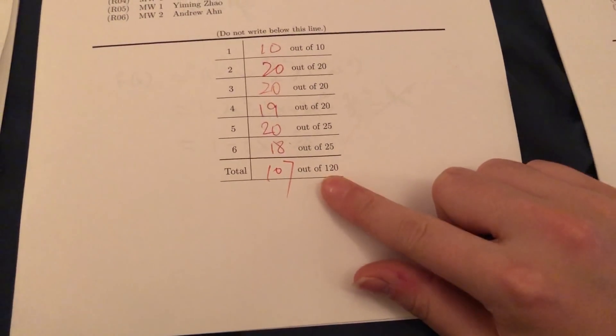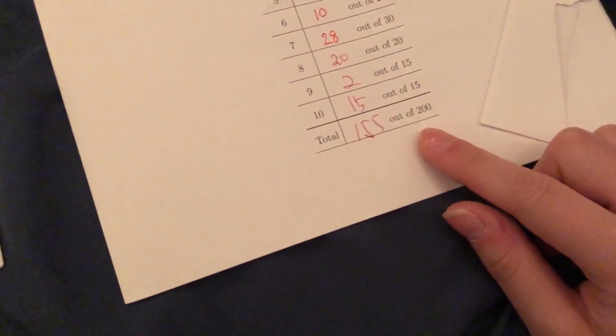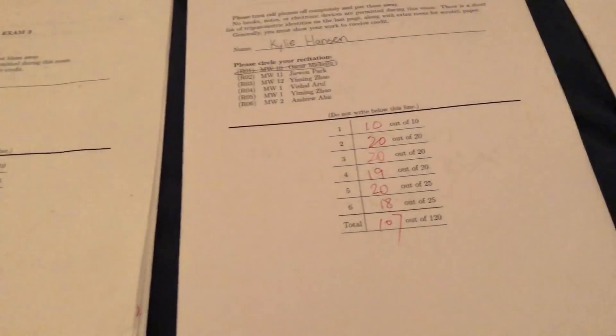So we're going to see how calculus tests are at MIT. We can kind of look at my scores if you're interested. Got 107 out of 120, 155 out of 200, and then 46 out of 55. So I did pretty average at MIT, I think. So these are pretty average scores for some context.